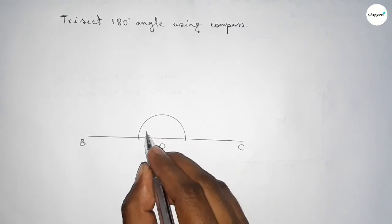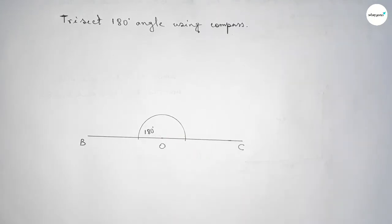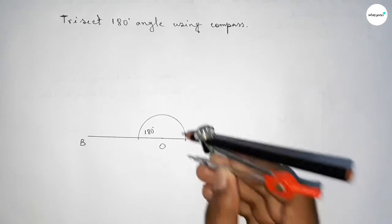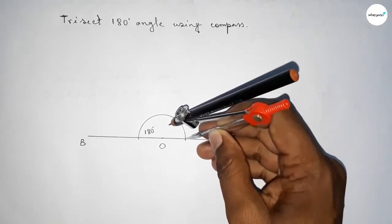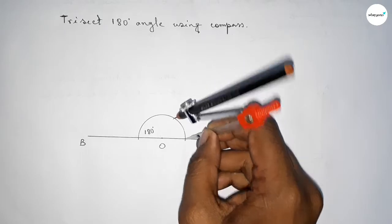this way. This is a 180-degree angle. Now we have to trisect this angle, so taking the same length and